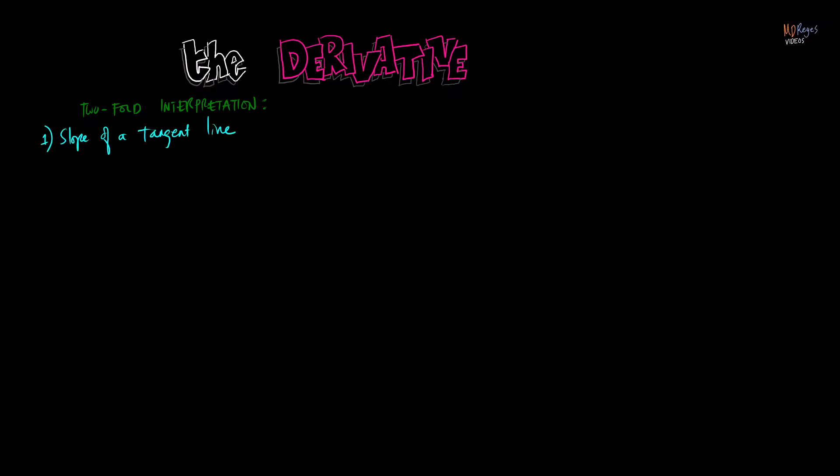Now we'll discuss the derivative. The derivative has a twofold interpretation: first, it is the slope of a tangent line to the graph of the function at a specific point, or it can be interpreted as a rate of change. Here is how we define the derivative of a function.